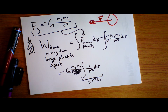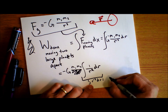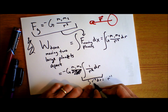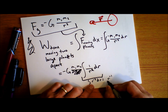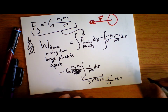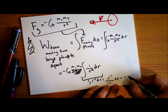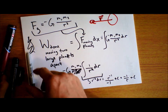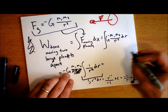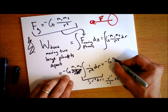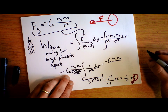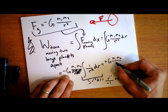We know how to deal with r to any power: raise the power by one and divide by the new power. So the integral of r to the negative 2 is r to the negative 1 divided by negative 1, which is negative 1 over r plus a constant — and that constant is zero. Plugging back in, the two minus signs cancel, giving us positive G times m₁ times m₂ divided by r.